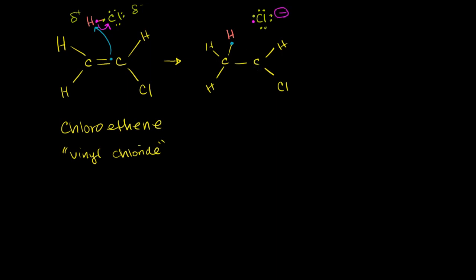This carbon over here lost an electron and now has a positive charge. Now, the next thing you might expect to happen, if we just followed the pattern of the last several videos, is you would say this carbocation will now take an electron from the chloride anion, which is completely plausible. But there's also a bunch of chloroethene — this isn't the only molecule of chloroethene sitting around.